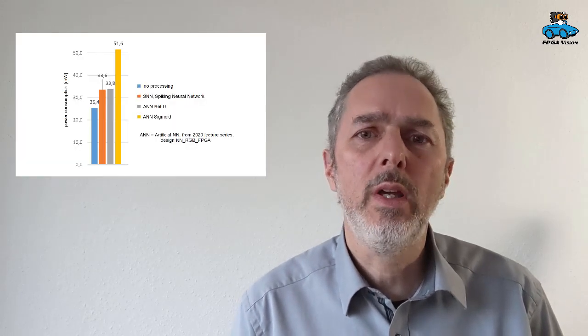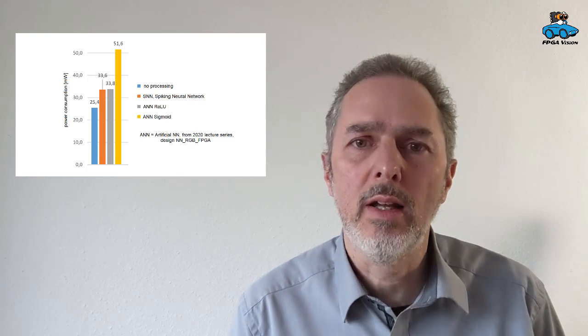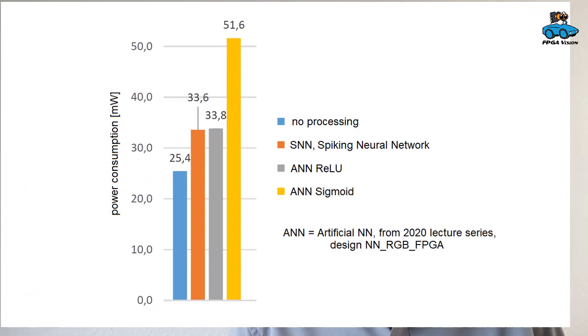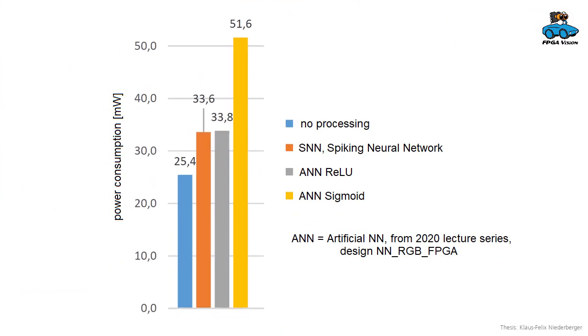In the first figure, we have here the power consumption that is used by the networks. Here you see the power consumption of an FPGA implementation. This value is the baseline consumption without any processing. And this value is the power consumption of the old neural network of the former lecture series. And if you compare the spiking neural network, you see a significant reduction.